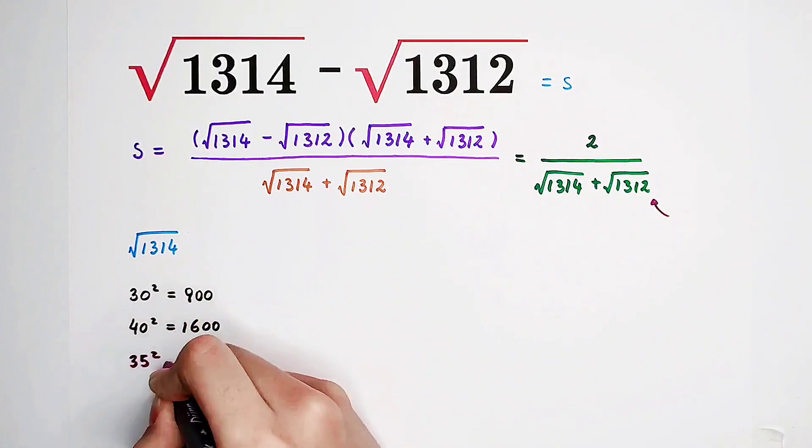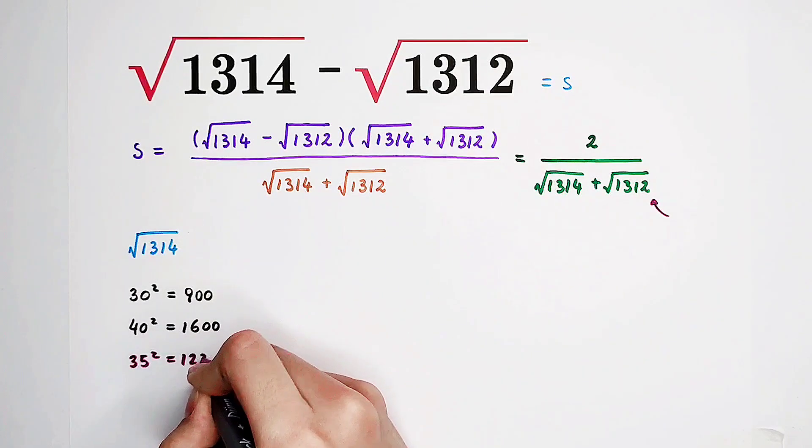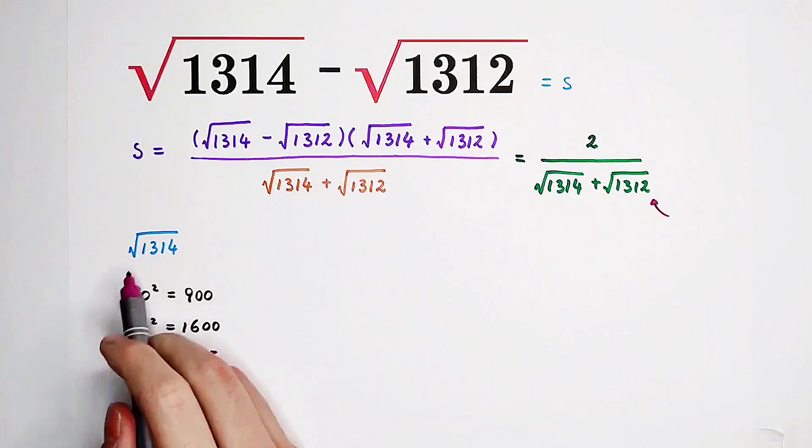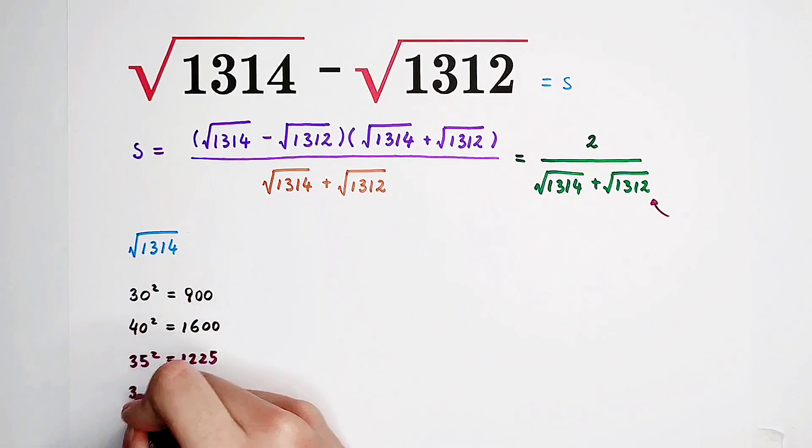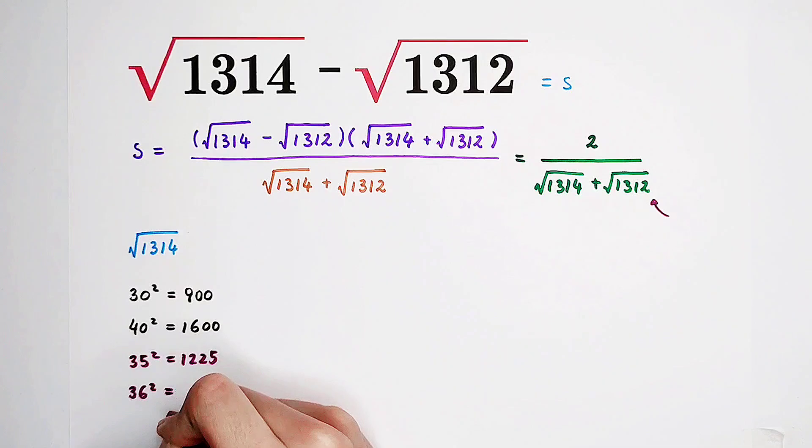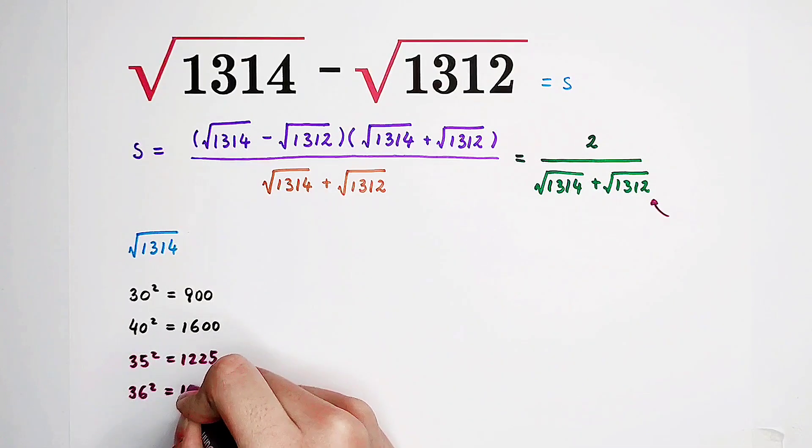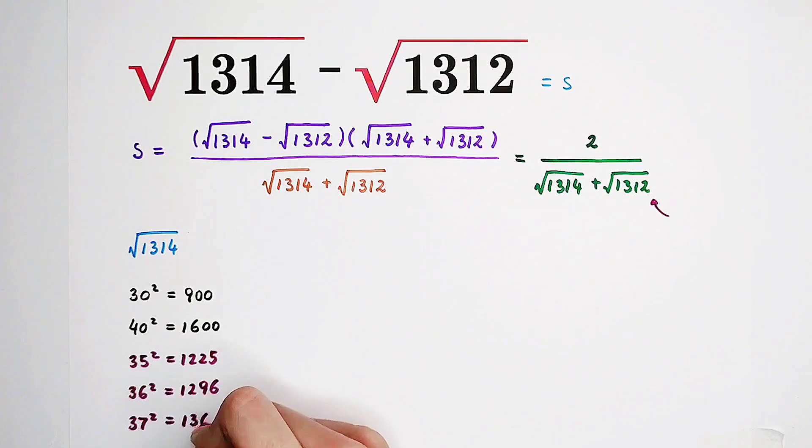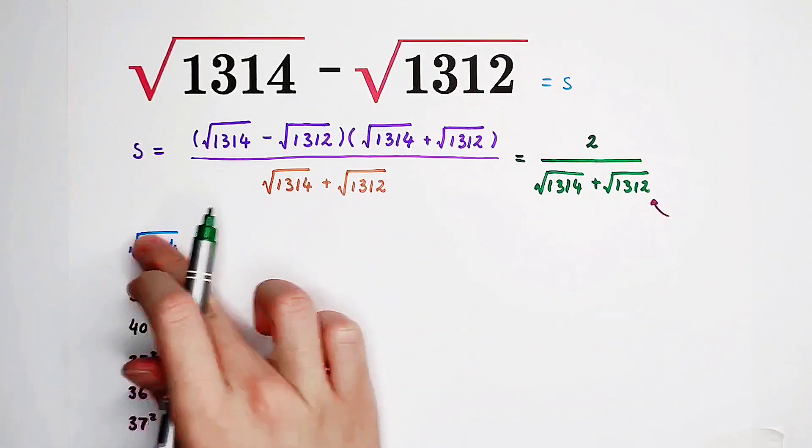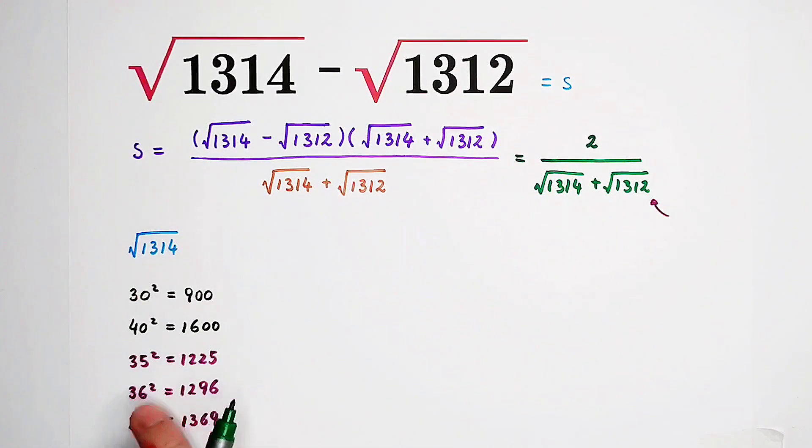Now, 35 squared, you can see, it is 1225. Smaller than this. 36 squared, it is 1296. Also smaller than this. 37 squared, it is bigger than this. It is 1369. So now, what can we say? This guy has to be between 36 and 37.